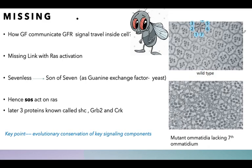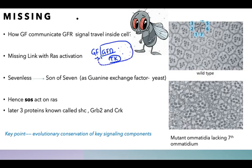The next question is: how does the growth factor communicate downstream within the cell? So far we have learned that a growth factor communicates with GFR and there is a process of tyrosine kinase phosphorylation. Now we want to understand how this tyrosine kinase activates certain proteins present inside the cell.